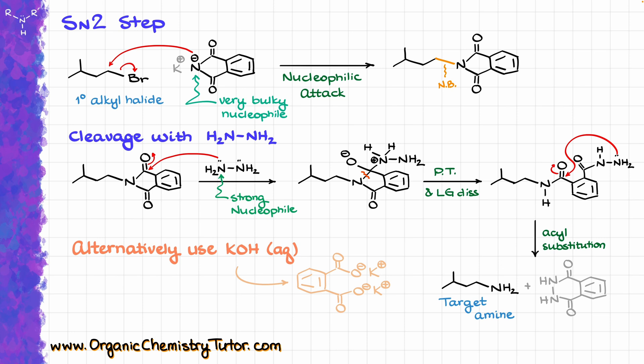Overall, the Gabriel synthesis is kind of a bad synthetic method — it tends to give bad yields, and the reaction is incredibly moody and a pain to deal with. While historically important and useful in select cases, we generally don't use it nowadays and mostly use reductive amination, which I also have a tutorial on — that's the premier way of making amines today. Nonetheless, Gabriel synthesis is a fairly common reaction tested in introductory organic chemistry, so you do need to know how it works. If you have any questions, let me know in the comments, and I'll see you next time!